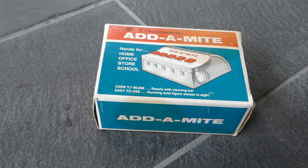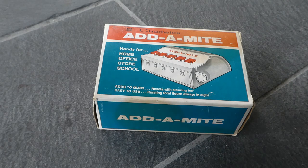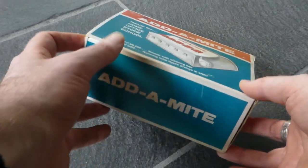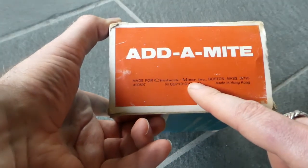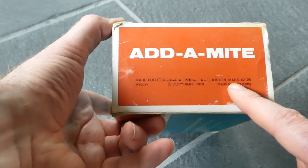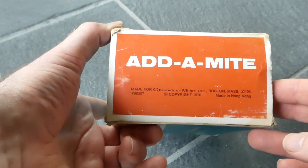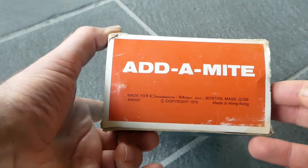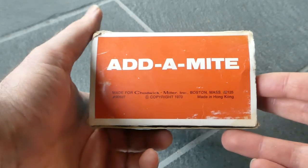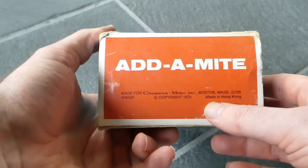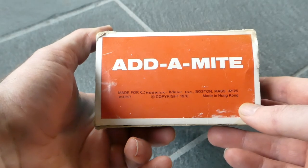Here we have the Chadwick Adamite. Chadwick was a company, Chadwick Miller Inc in Boston, Massachusetts. It was a company that tended to import cheap plastic calculators and other goods from Hong Kong, China, and Japan.